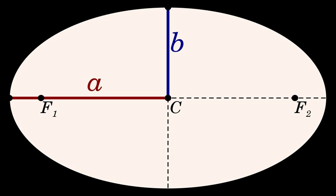The semi-minor axis of an ellipse is the geometric mean of these distances: b = √(r_max · r_min). The eccentricity of an ellipse is defined as e = √(1 − b²/a²), so r_min = a(1 − e) and r_max = a(1 + e).